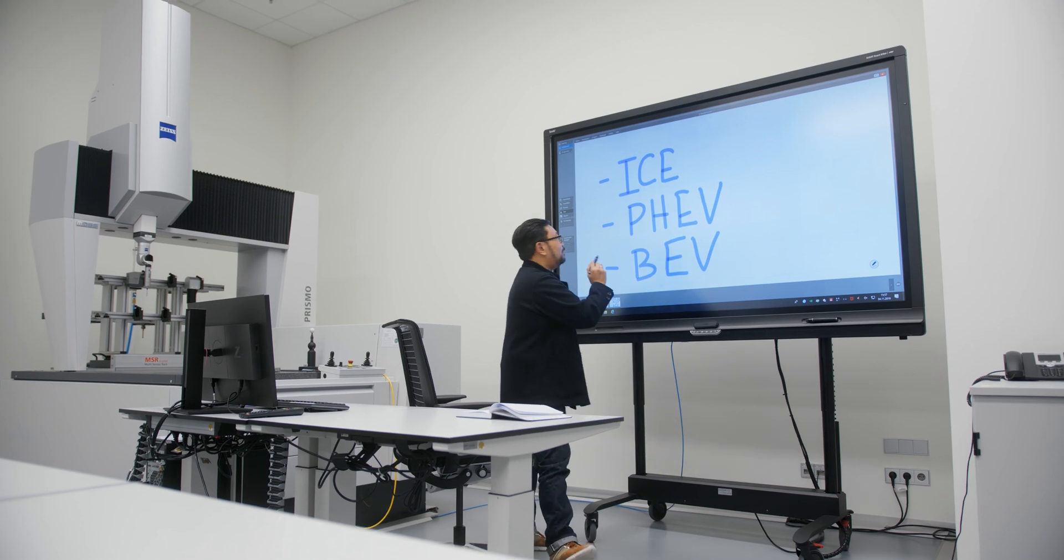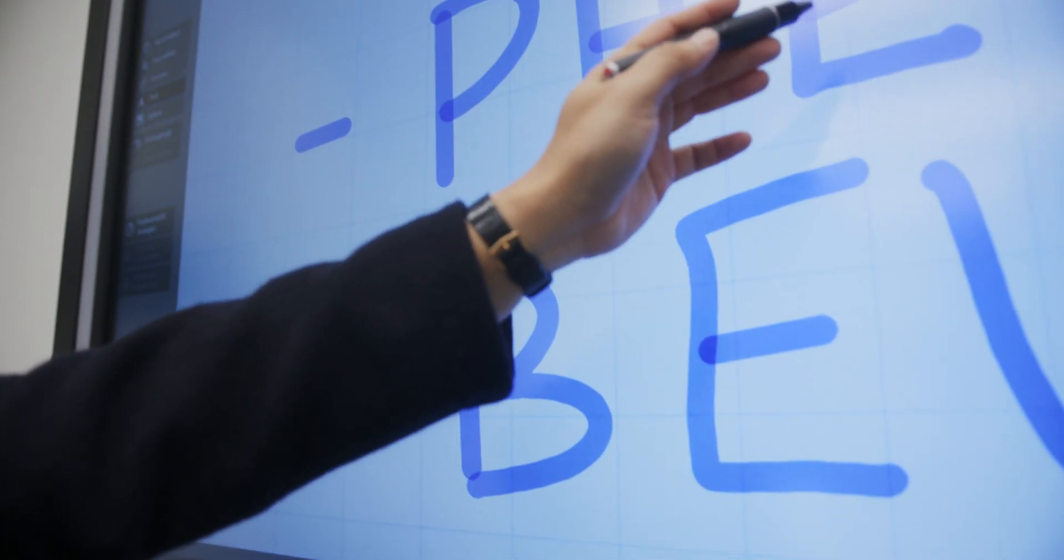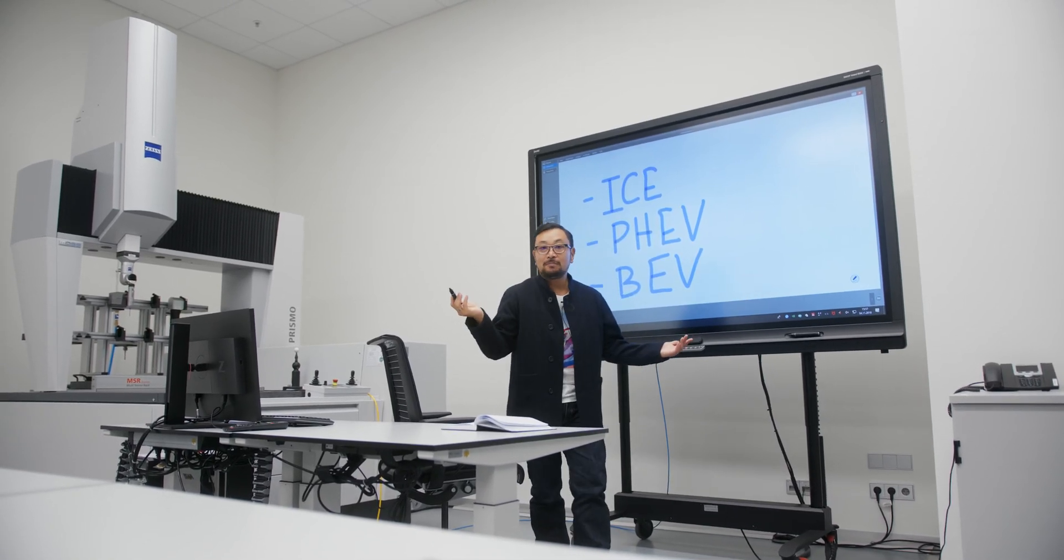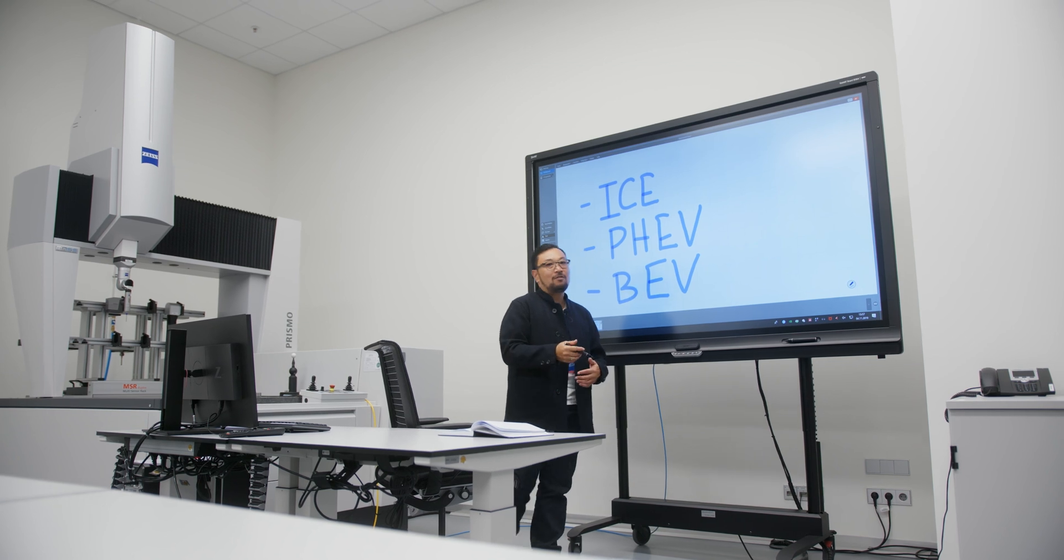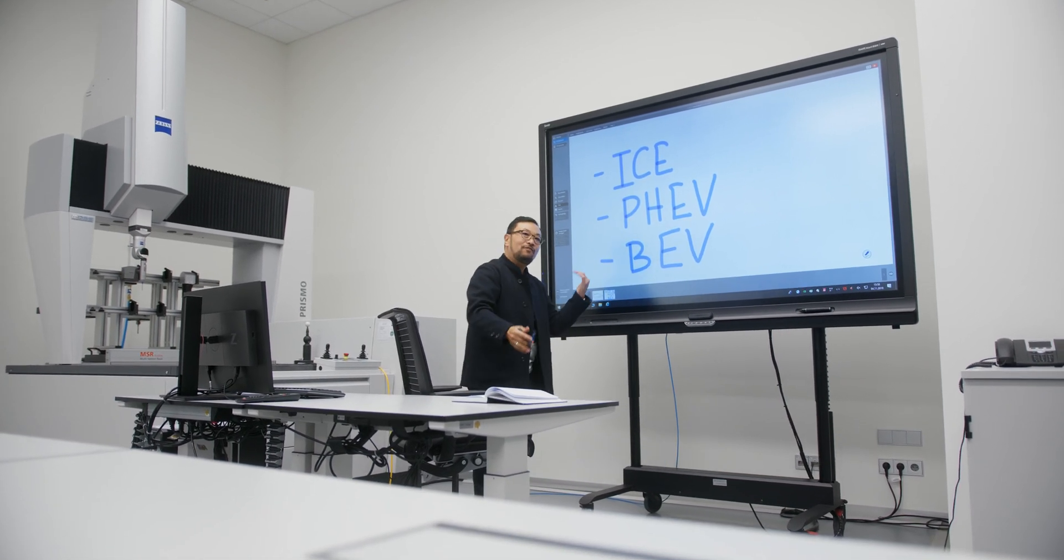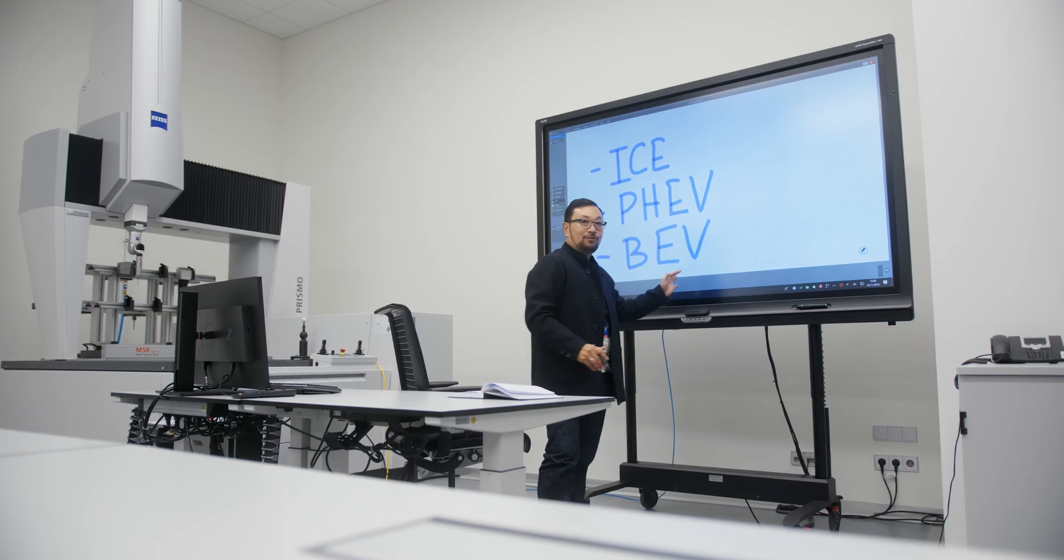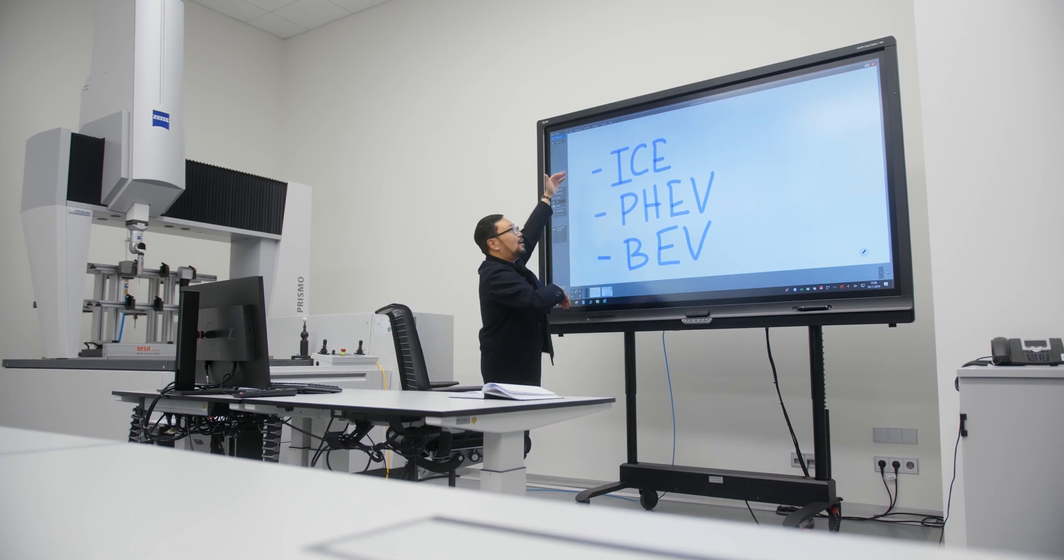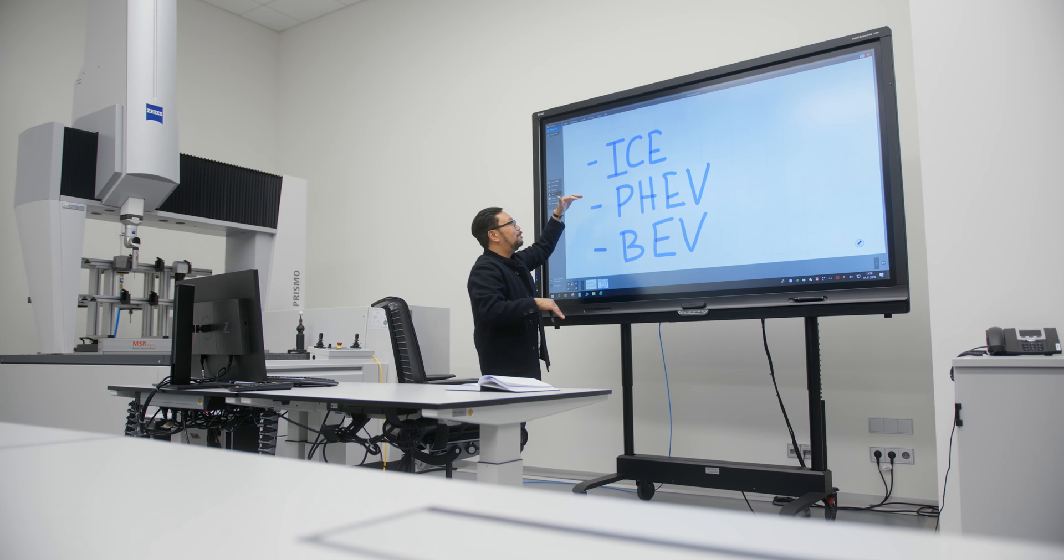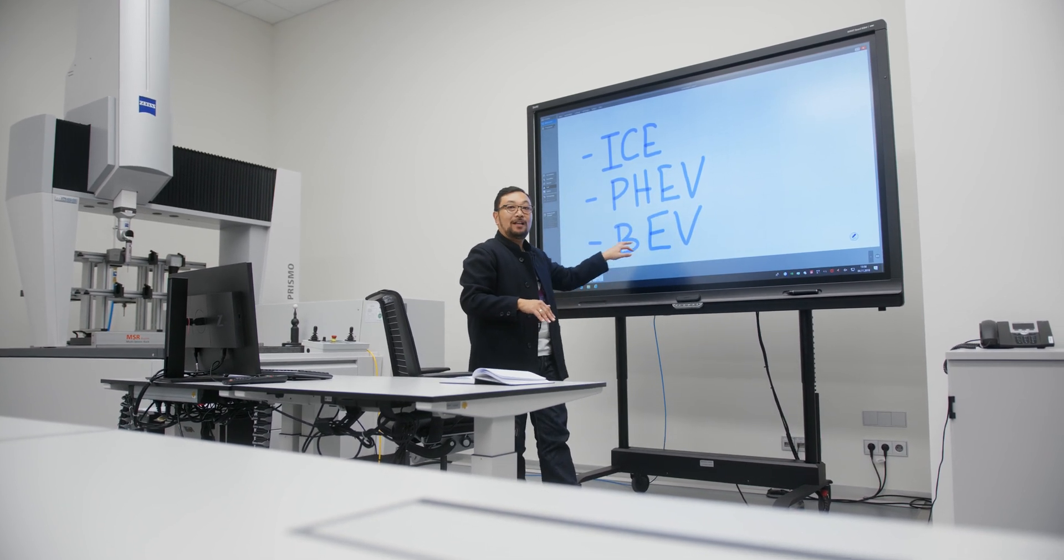The second one is called PHEV or plug-in hybrid electric vehicle. You might know them as simply hybrids. They've been around for about 20 years or so. As we move forward into the future, we have what's called a BEV, battery electric vehicle. We already know what an ICE is. Let's talk about the difference between a plug-in hybrid electric vehicle and a battery electric vehicle.